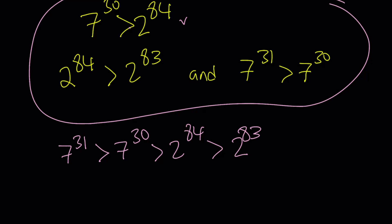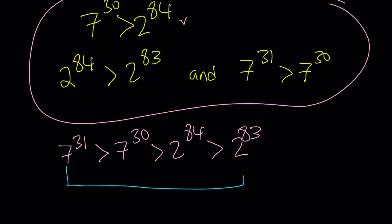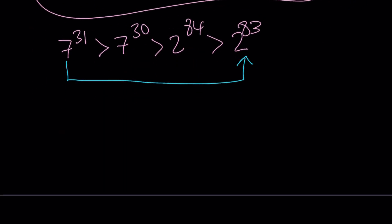And if you skip the two numbers in the middle, you notice that 7 to the power 31 is greater than 2 to the power 83. We were looking for the larger number. In this case, 7 to the power 31 wins.